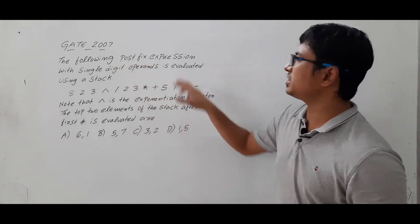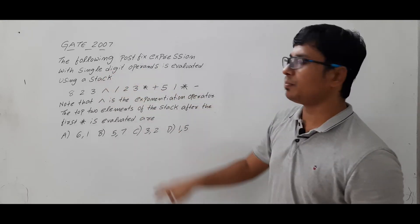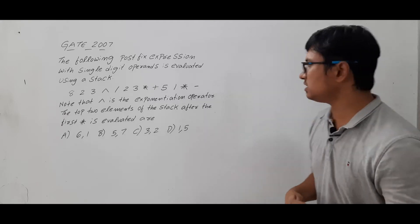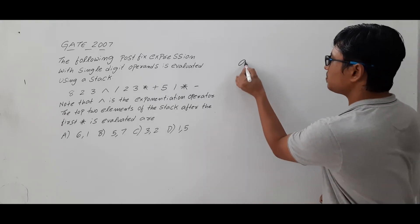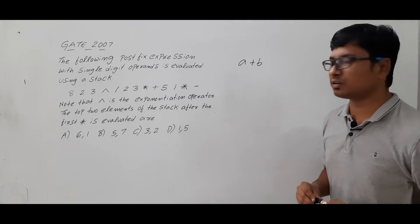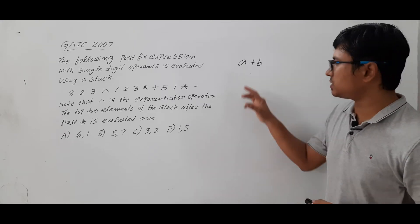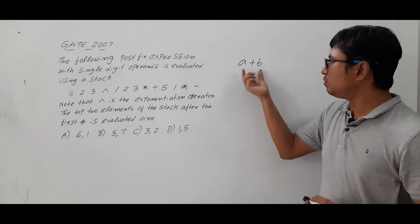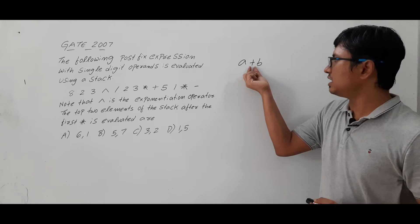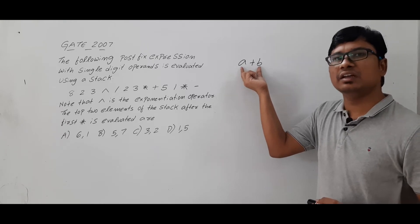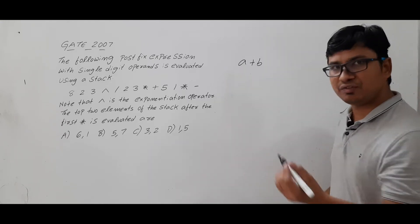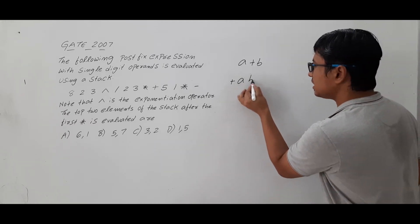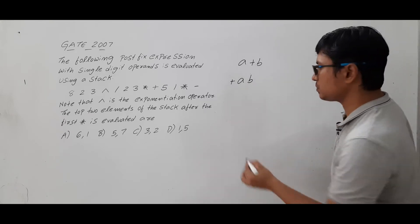The following postfix expression with single digit operands is evaluated using a stack. What is a postfix expression? Suppose if you have a plus b, this is an infix expression — you have an operand, operator, and operand. We call it an infix expression because the operator is in between the two operands. In a prefix expression, you will have operator, then operand, then operand.